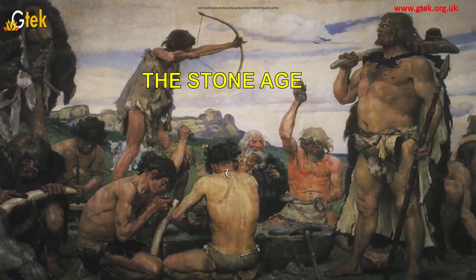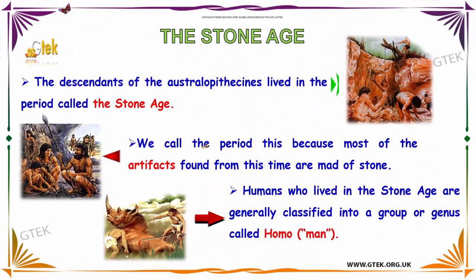Now we are going to see about the Stone Age. The descendants of the Australopithecines lived in a period called the Stone Age. We call it this because most of the artifacts found from this time are made of stone. Humans who lived in the Stone Age are generally classified into a group or genus called Homo, meaning 'man.'